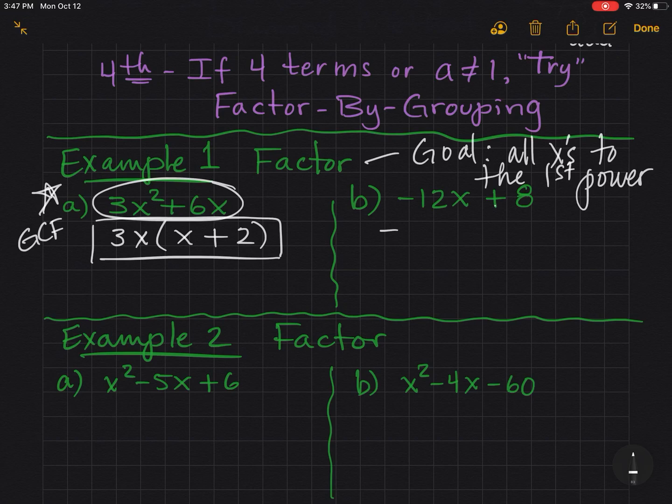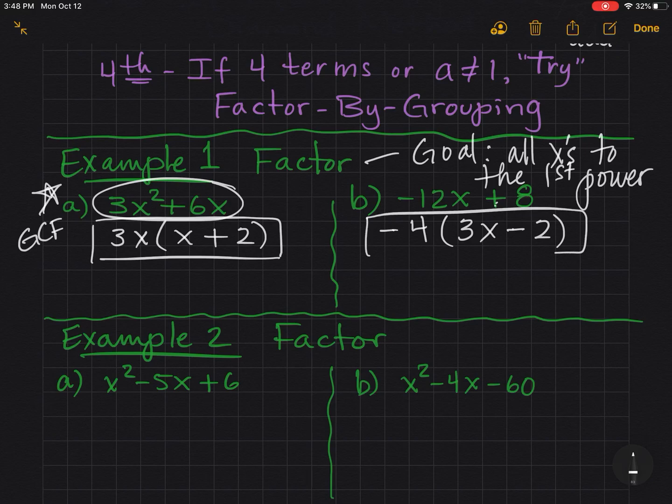Okay, if there's a negative sign first, factor that out also. Now, between the 12 and 8, 4 is the greatest common factor. That leaves me with 3x, and 4 times 2 is 8. Watch the signs. I need negative times negative in order to get the positive. If I multiply that back together, I get negative 12x plus 8. So that's a good answer.